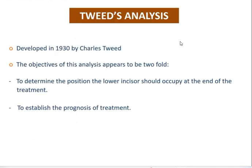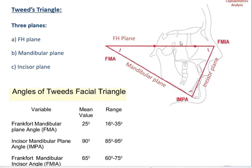We will now discuss the second analysis, which is Tweed's analysis, developed by Charles Tweed in 1930. The objectives are to determine the position the lower incisor should occupy at the end of treatment and to establish the prognosis of treatment. With Tweed's analysis, there are three planes and three angles to remember.